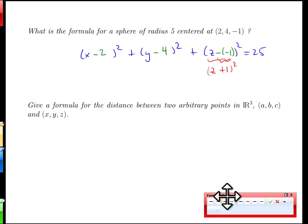Once again we can leverage this for one last formula. This 25 is a radius which is the distance squared to the center at 2, 4, negative 1. So this last result is going to give us one final piece of information for this unit.